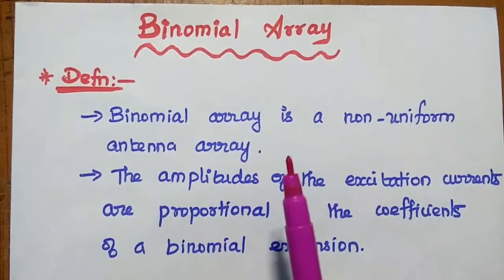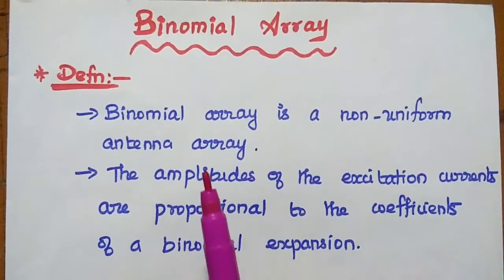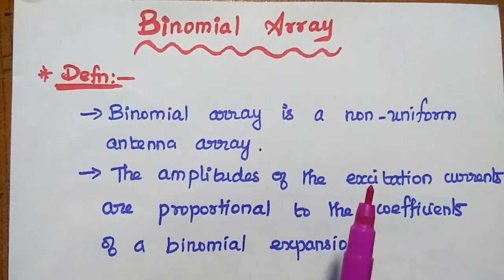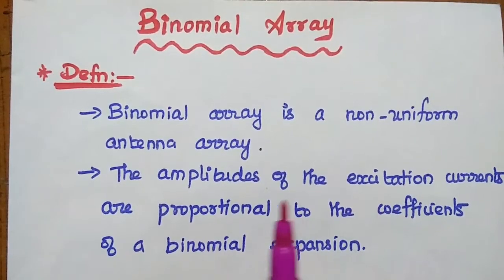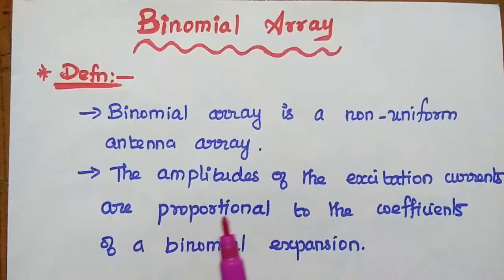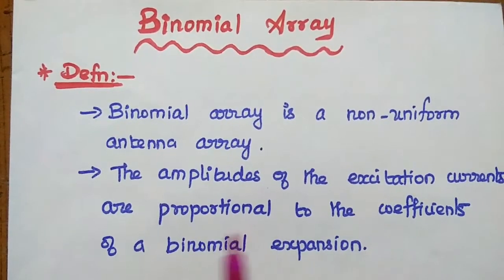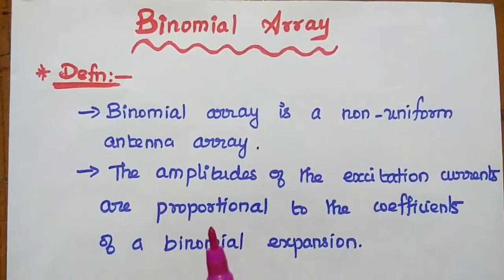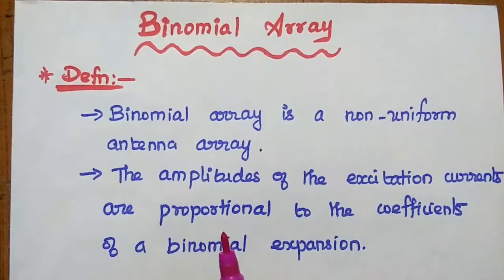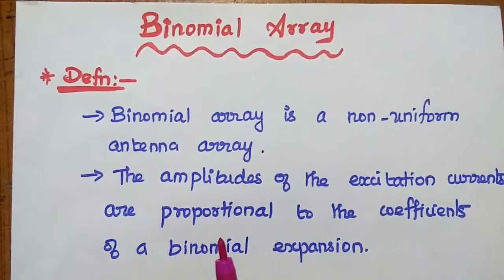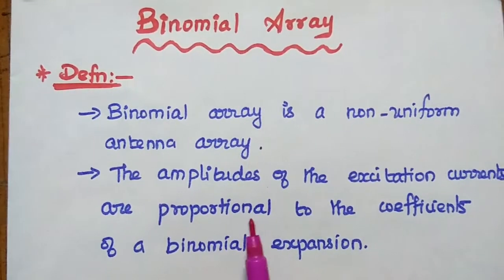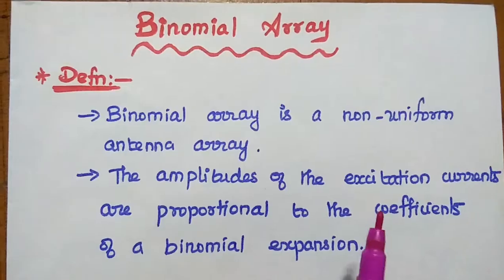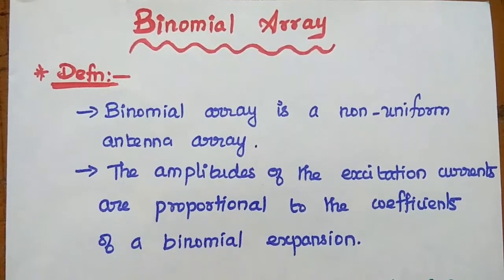Array is a group of elements. In this binomial array, the amplitudes of the excitation currents to each element are proportional to the coefficients of a binomial expansion. It is not having the same amplitude. Each element is getting excited with an amplitude which is proportional to the coefficients of a binomial expansion.